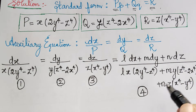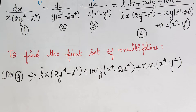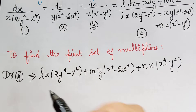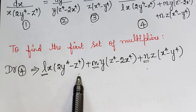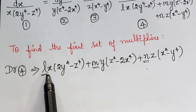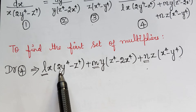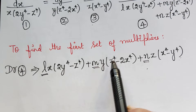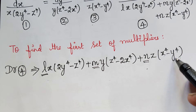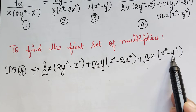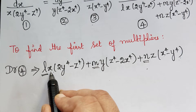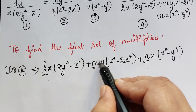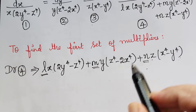Now we have to find the set of multipliers which makes the denominator of the fourth ratio equal to 0. We have taken the denominator of ratio 4 and written it separately. Observing the expression, we have x, y, and z outside, and within the bracket we have terms y⁴, z⁴, z⁴, x⁴, x⁴, y⁴ — so all the terms are of power 4. If we make the powers of x, y, and z each equal to 4, it will be easy to cancel.